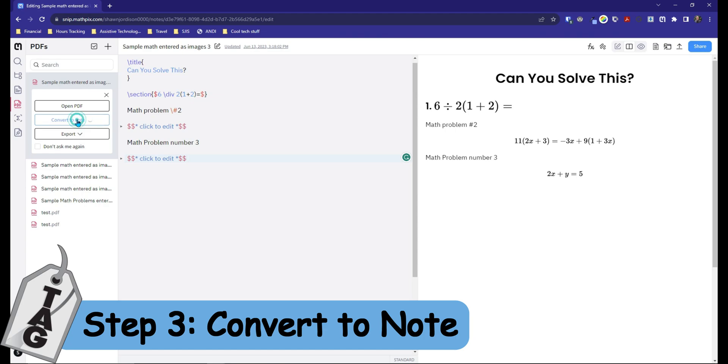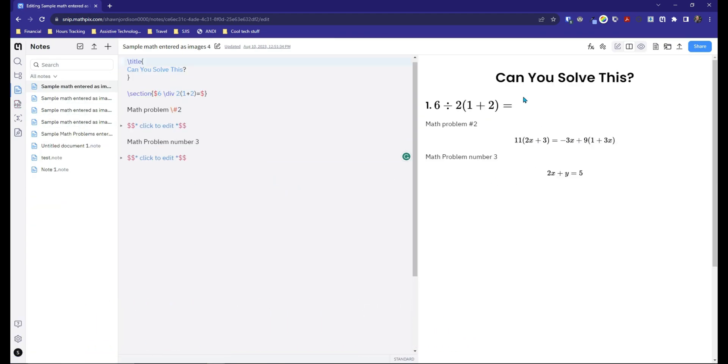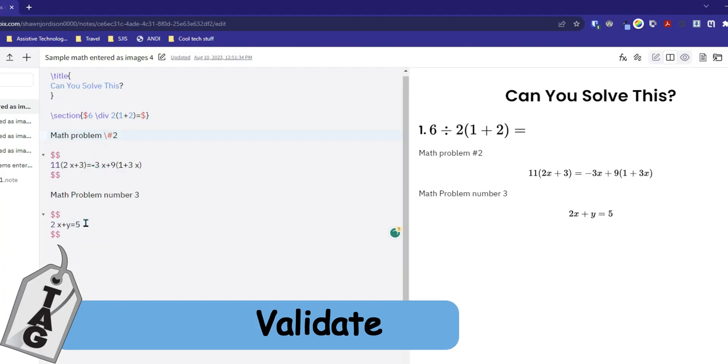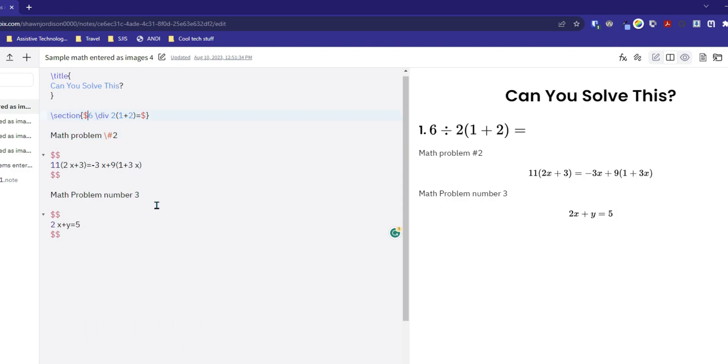I want to convert it to a note just in case I need to make some changes to it. On the right hand side, we get a snapshot as to what the math actually is going to visually look like. And then on the left hand side, we have all of our math entered properly as either LaTeX or MathML.